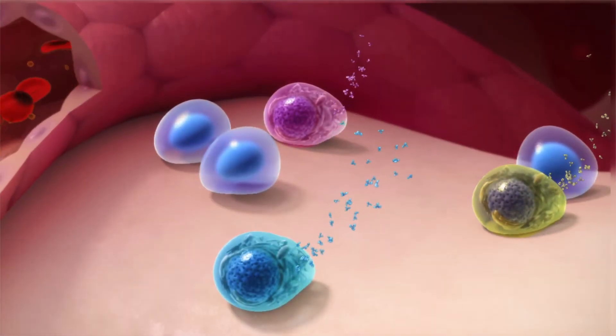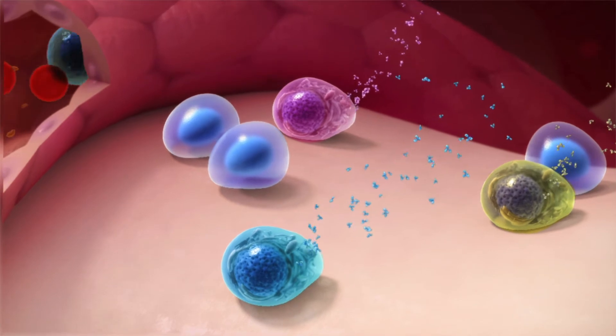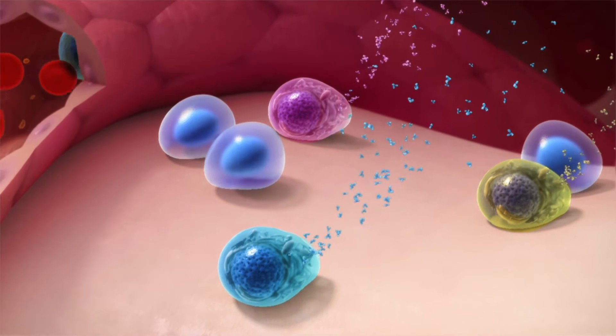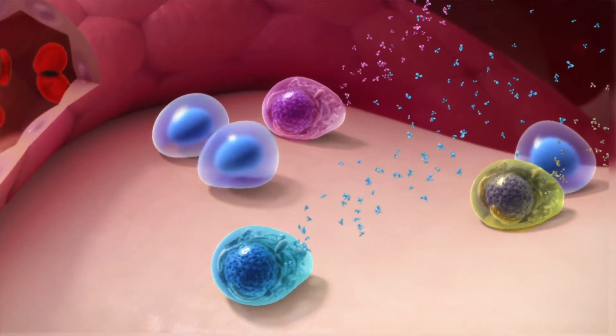To recognize all possible types of germs, different plasma cells make different antibodies by deliberately rearranging specific segments of their DNA. Each plasma cell makes a unique set of antibodies that only targets one type of germ.